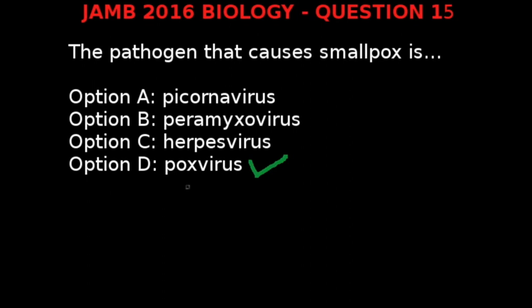Smallpox is a disease caused by poxvirus that is transmitted from person to person and causes high fever and a characteristic rash. It may kill about one third of those infected. Smallpox, also called variola, is the only disease that has been completely wiped out throughout the world. So the correct answer is poxvirus.